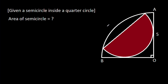In this video, we have been given a semicircle inside a quarter circle, and AO is 5. We have to find the area of the semicircle. Suppose the center of the semicircle is C, and AO is 5.